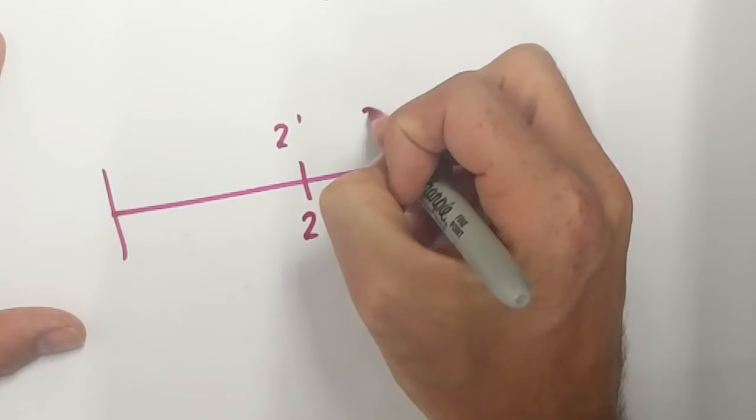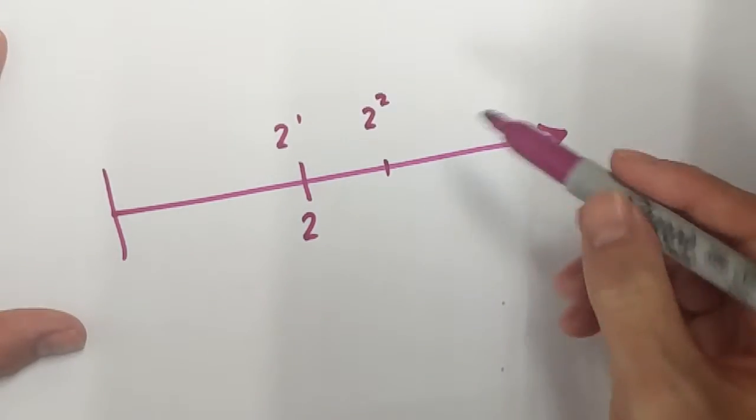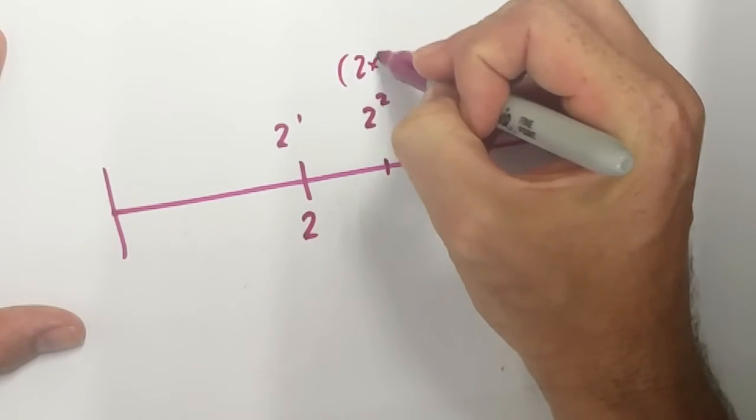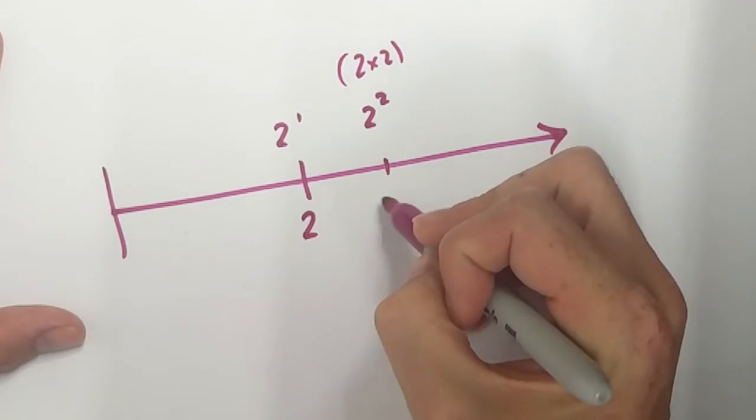If I go to my next one, which is 2 to the power of 2, I know that that's the same as 2 times 2. Well, 2 times 2, that's the same as 4.